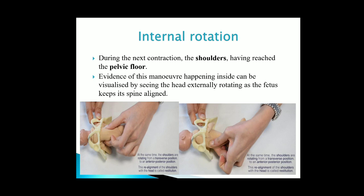Internal rotations: during the next contraction, the shoulders having reached the pelvic floor, evidence of this movement inside can be visualized by seeing the head externally rotating as the fetus keeps its spine aligned, as can be seen in the picture. The shoulders are rotating from a transverse position to an anterior-posterior position. This alignment of the shoulder with the head is called restitution.